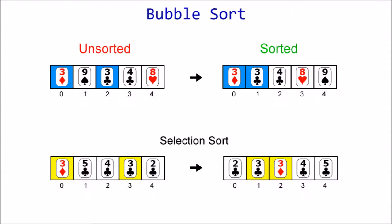In the selection sort video, we discovered that it is not a stable algorithm because the order of those two cards was reversed.